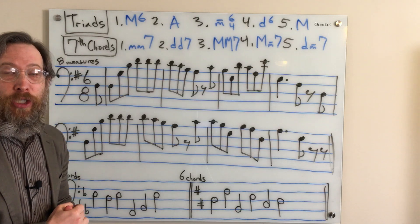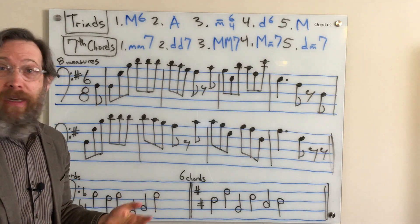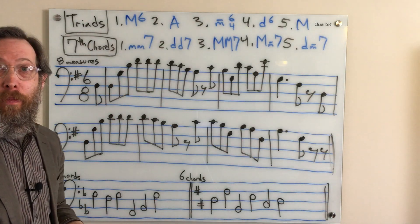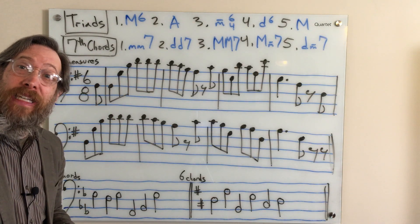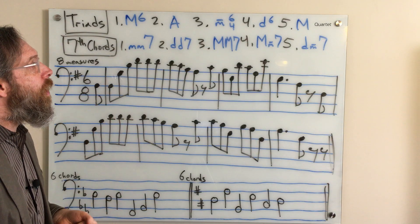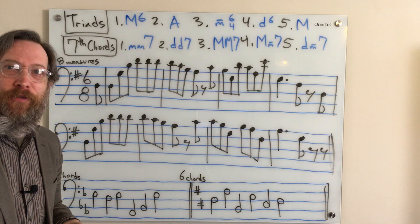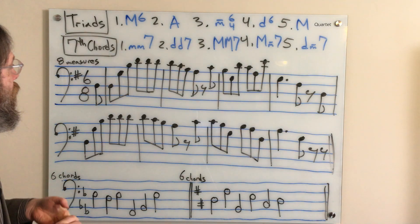Number three is a major, major seven. You could call that a major seventh chord. Number four is a major minor seven. This is sometimes called a dominant seventh chord. And then finally, number five is a diminished minor seven, sometimes called a half diminished seventh chord.